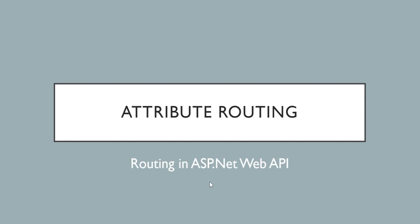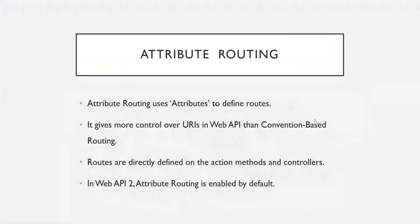Hello friends, welcome back. We are studying routing in ASP.NET Web API. In this video we are going to see another type of routing that Web API supports, which is attribute routing. In attribute routing, we use attributes to define the routes.